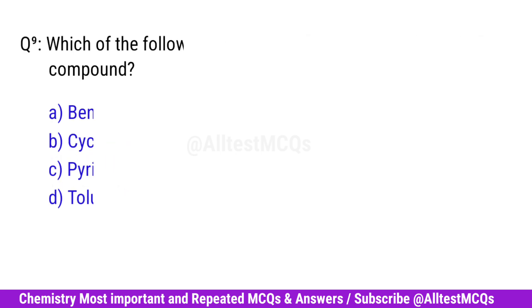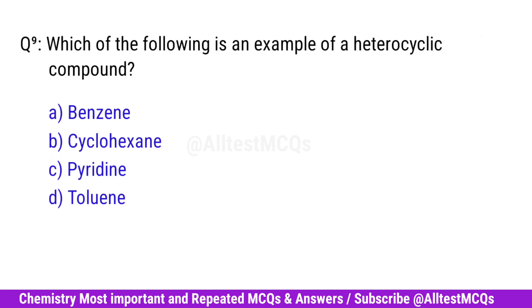Question No. 9. Which of the following is an example of a heterocyclic compound? Correct option is C. Pyridine.